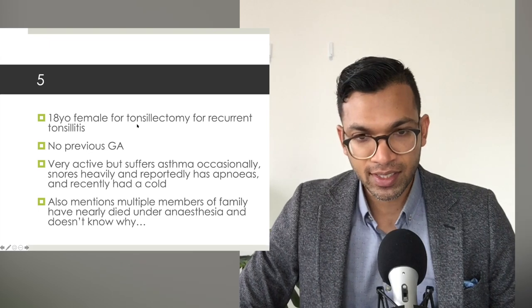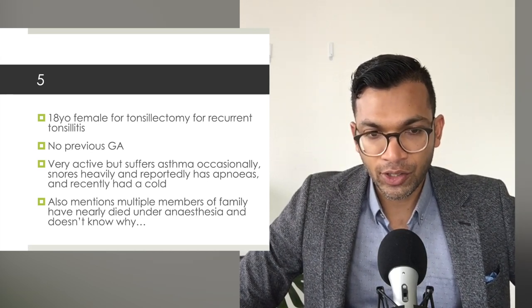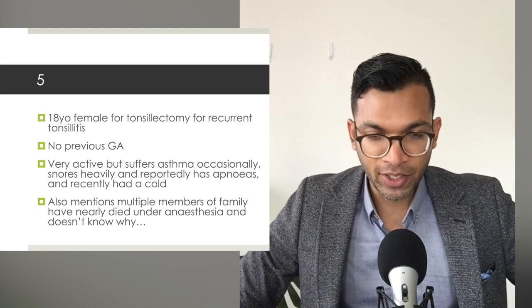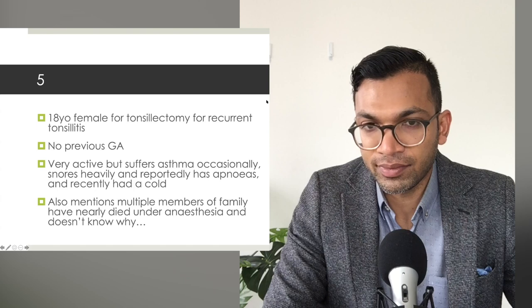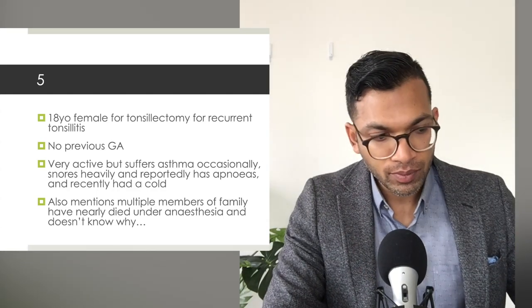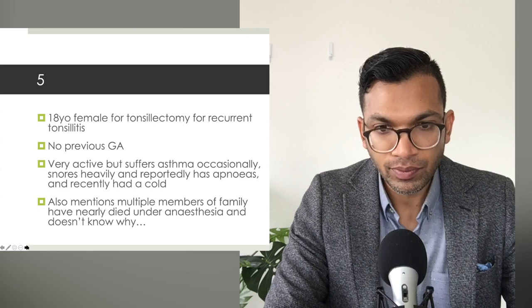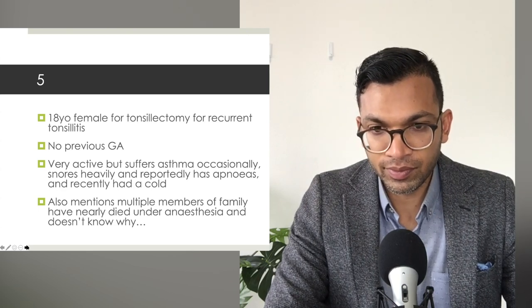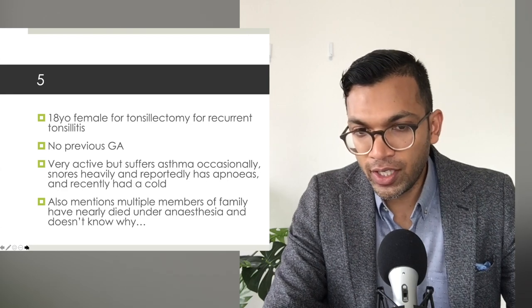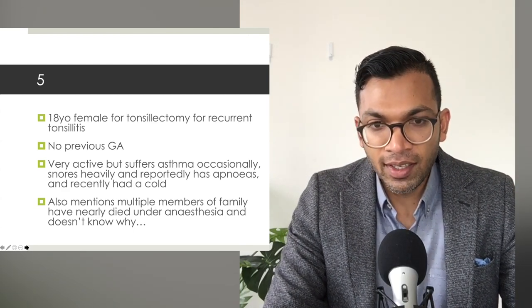An 18-year-old female for tonsillectomy for recurrent tonsillitis, no previous general anaesthesia, very active but with occasional asthma, heavy snoring, and reported apnoeas. She recently had a cold. Crucially, multiple family members died or nearly died under anaesthesia and she doesn't know why. Summary: 18-year-old female, elective tonsillectomy, likely moderate risk given asthma and an unclear family history I'd like to explore further. Main issues include the family history, possible underlying allergies, and potential anxiety. The heavy snoring and apnoeas raise concern for undiagnosed OSA.